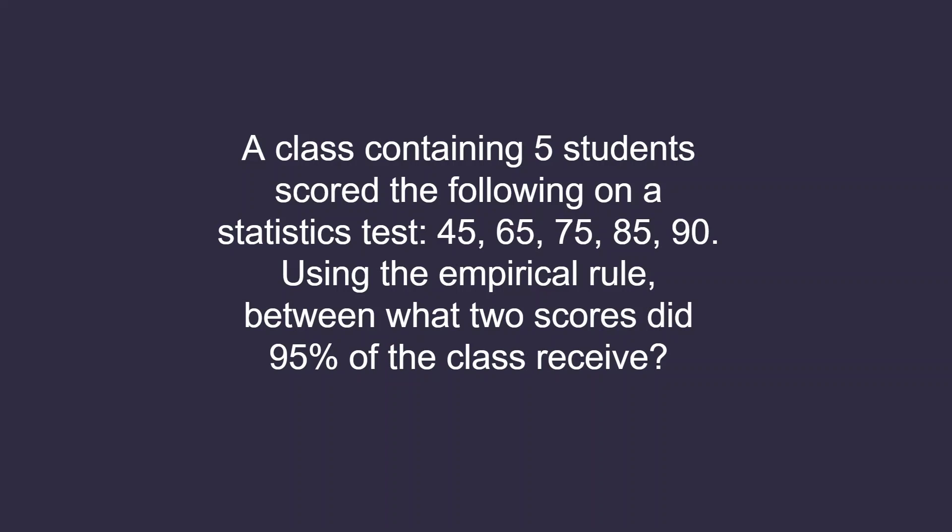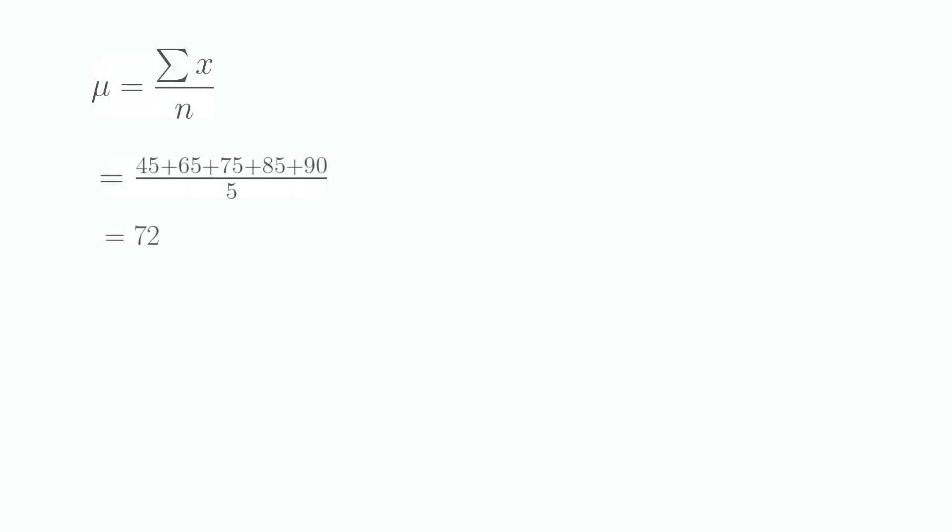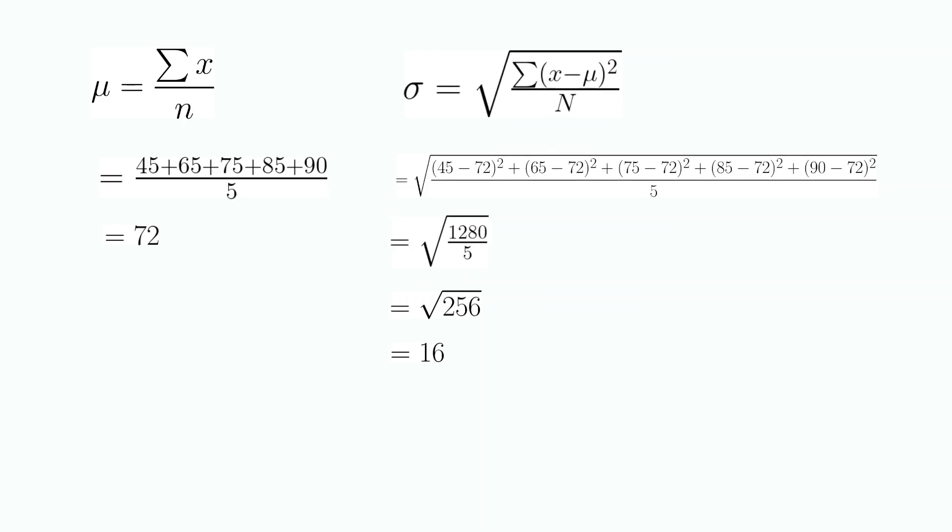Using the empirical rule, between what two scores did 95% of the class receive? Using the data we have and the formulas we learned today for mean and population standard deviation, we calculate our mean and population standard deviation to be 72 and 16, respectively.